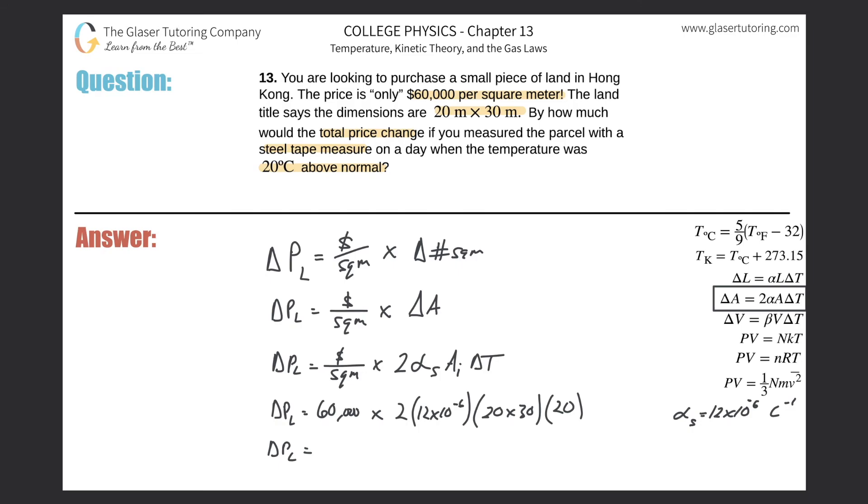Let's see what the price change works out to be. This is going to be 60,000 times 2 times 12 times 10 to the minus 6 times 20 times 30 times 20, and we get about 17,800. With two sig figs, this is $17,000 that will be the change in the price.